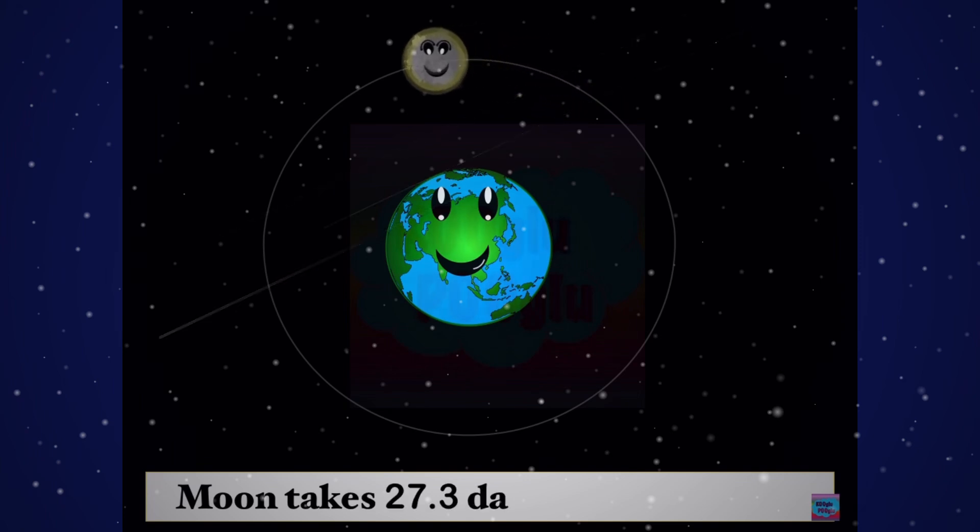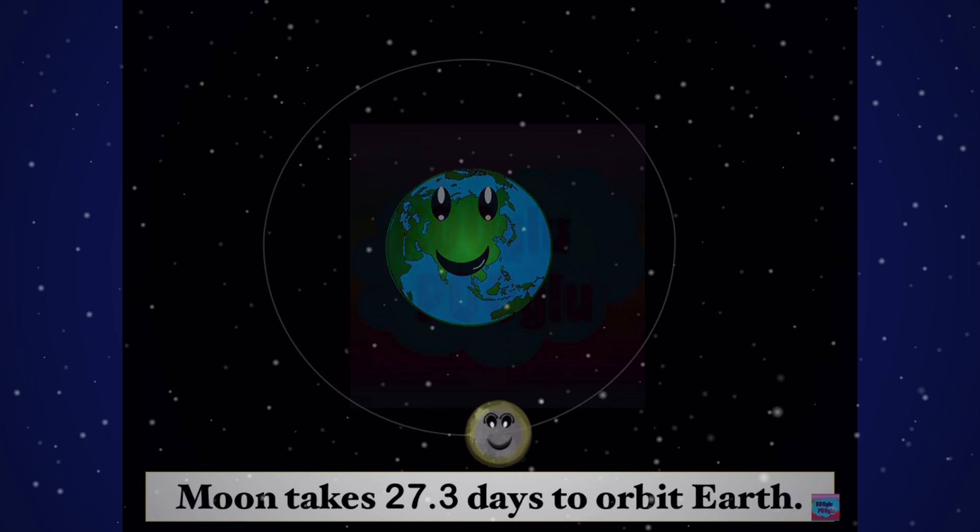The Moon takes 27.3 days to orbit Earth. That's around almost a month.